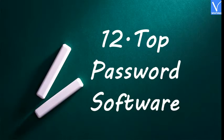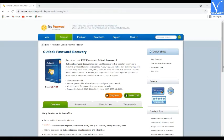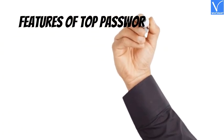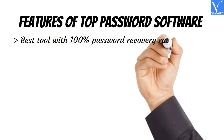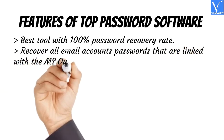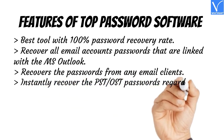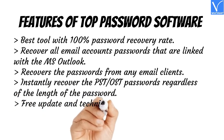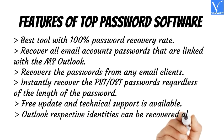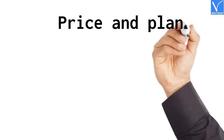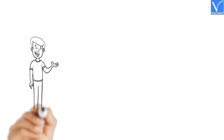Number 12: Top Password Software. Top Password Software will recover your lost or forgotten Outlook password quickly. It supports Outlook versions 2019, 2016, 2013, 2010, 2007, 2003, XP, 2000, Windows Mail, Windows Live Mail, etc. Features: Best tool with 100% password recovery rate. Recovers all email account passwords linked with MS Outlook. Recovers passwords from any email clients. Instantly recovers PST or OST passwords regardless of password length. Free updates and technical support available. Outlook respective identities can be recovered along with the passwords. The price and plans of Top Password are exhibiting on the screen. The product link is provided in the description.